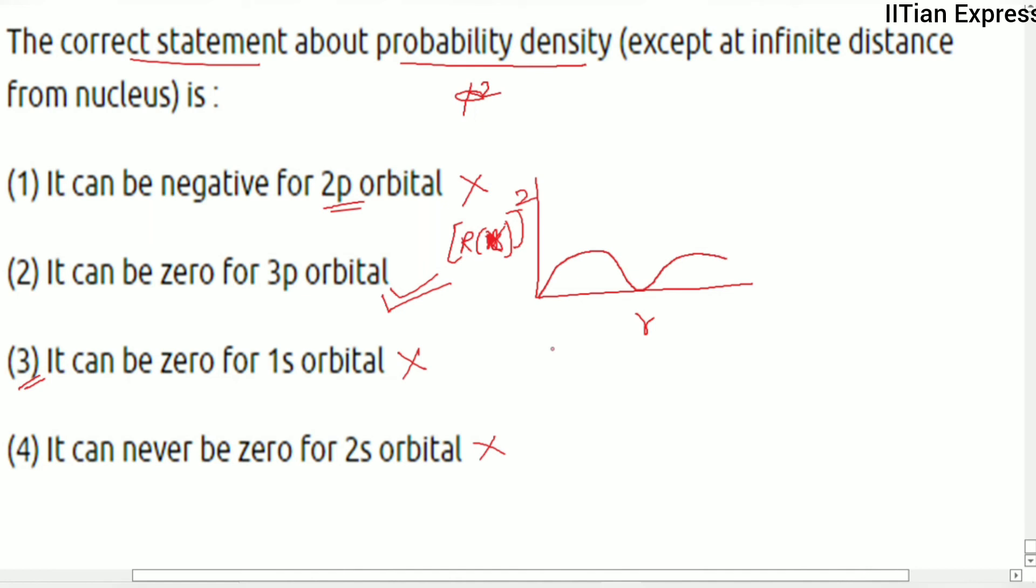a single radial node. So option 2 is the correct answer. Hope you got the answer. Thanks for watching and have a good day.